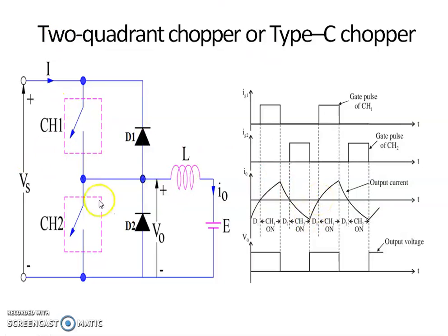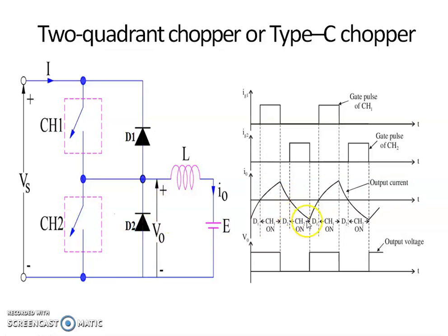The cycle then repeats: CH1 turns on, output voltage is positive; CH1 turns off, energy stored in the inductor freewheels through diode D2; when current reaches zero, CH2 is turned on and current flows in the reverse direction driven by DC source E; then CH2 is turned off, load voltage V0 equals E plus L times dI/dt which is greater than Vs, diode D1 becomes forward biased and energy flows from load to source. This is the operation of a Type C chopper.